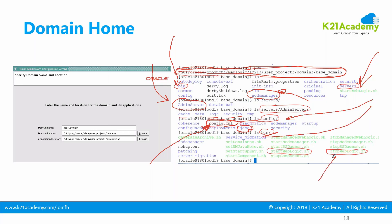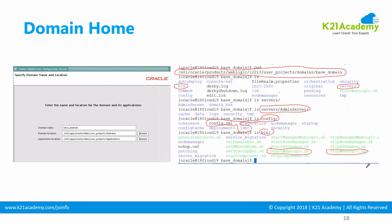The bin folder will have all the start and stop scripts. You have startWebLogic.sh to start the Admin Server, stopWebLogic.sh to stop the WebLogic server, and similarly scripts to start and stop Node Manager and the Managed Servers as well. We'll see all these - what the start and stop scripts are for Admin Server, Managed Servers, and Node Manager. That's all about a Domain Home.